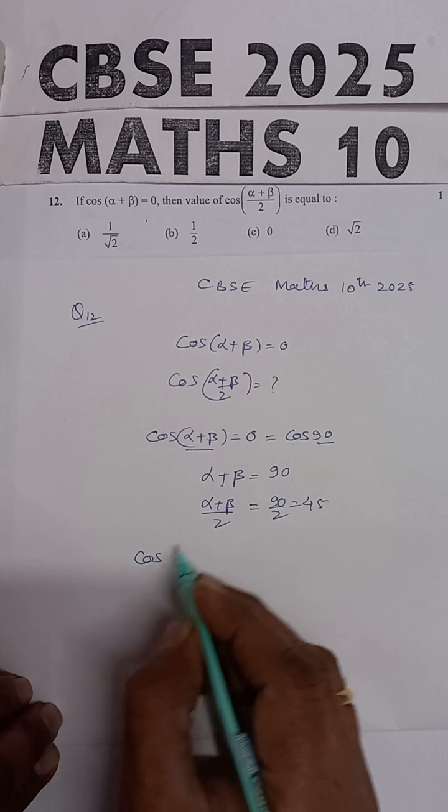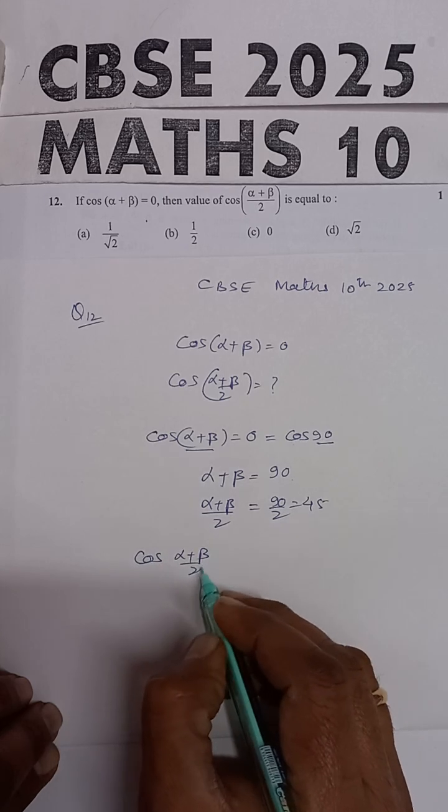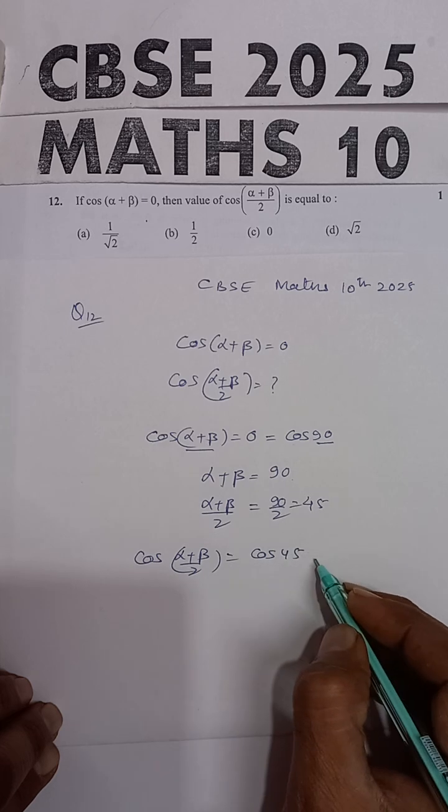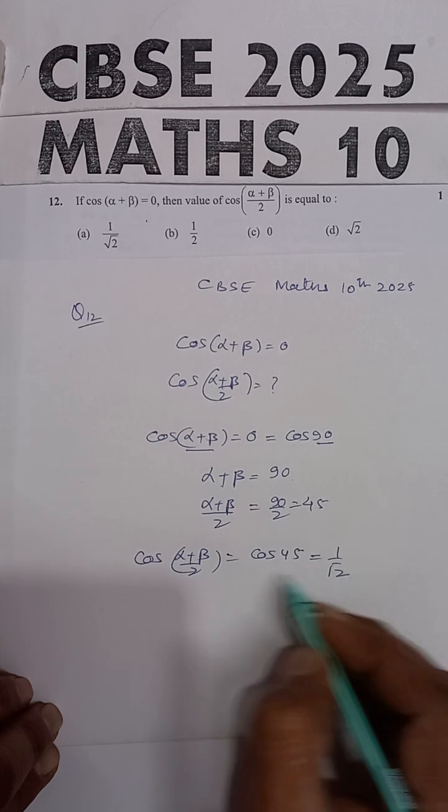So taking cos on both sides, cos of alpha plus beta upon 2 will be equal to cos of 45. And cos 45 ki value, 1 by root 2 hai.